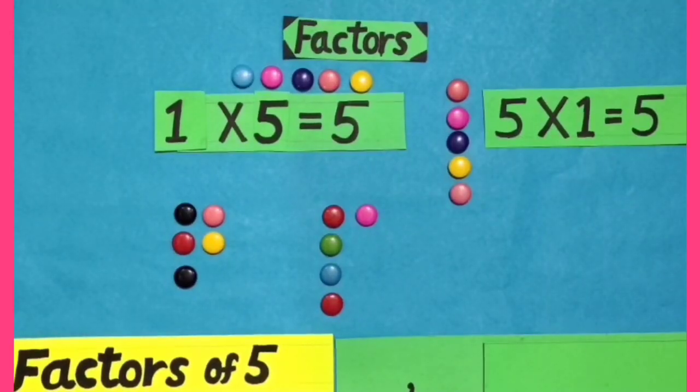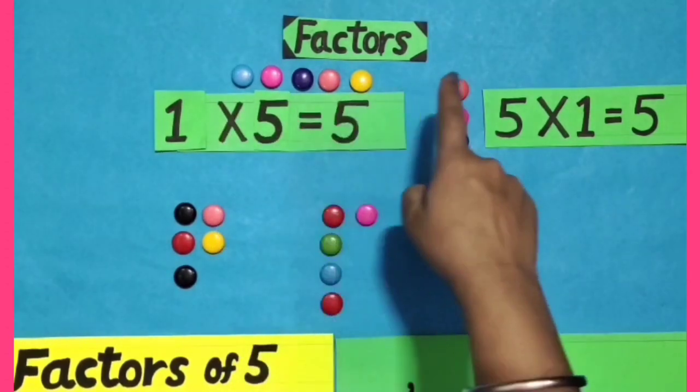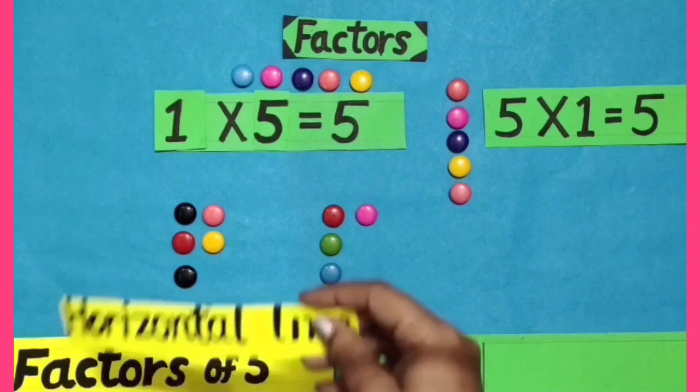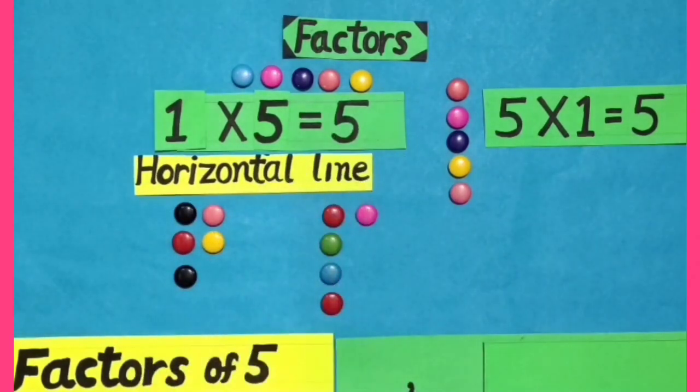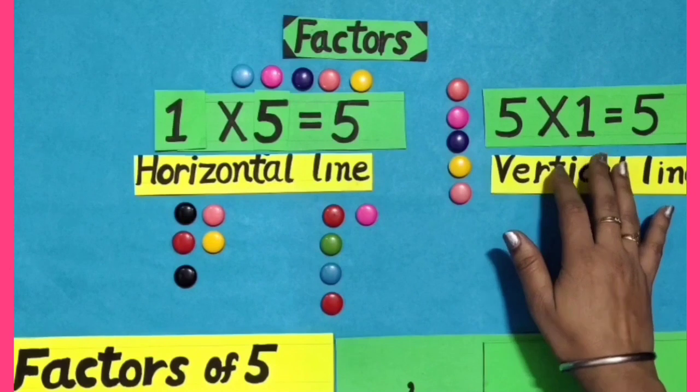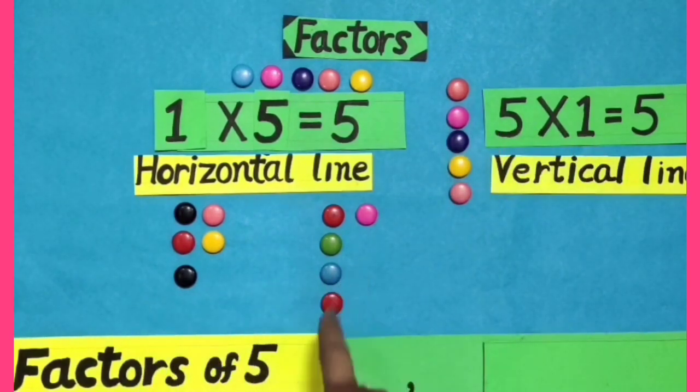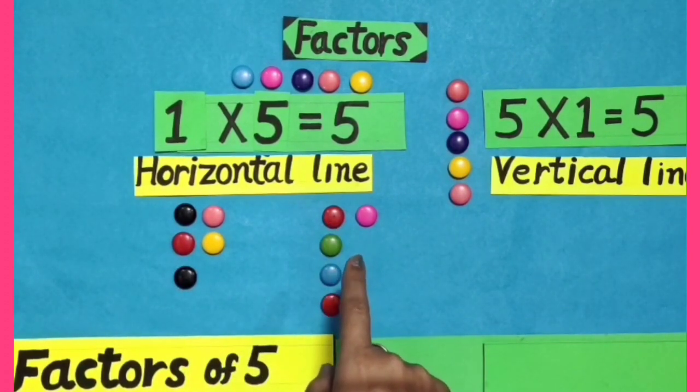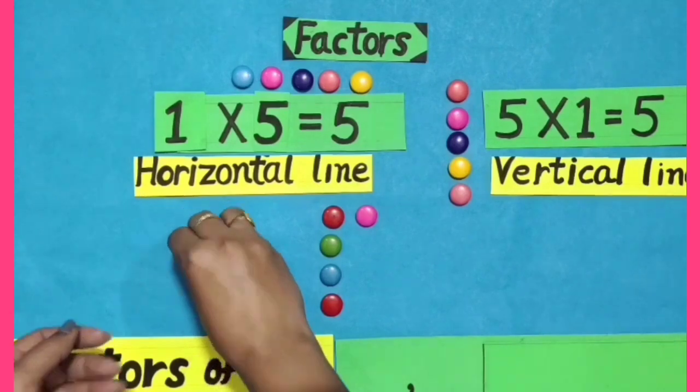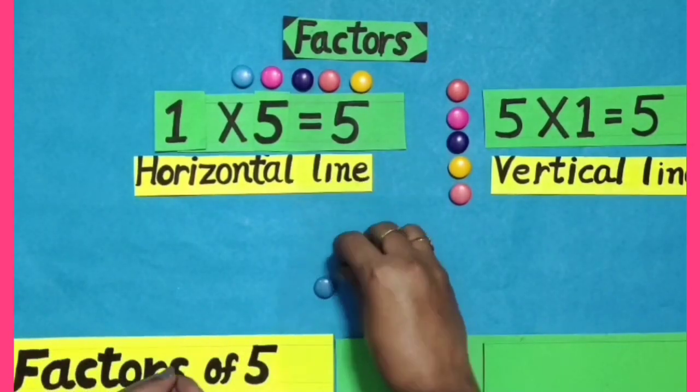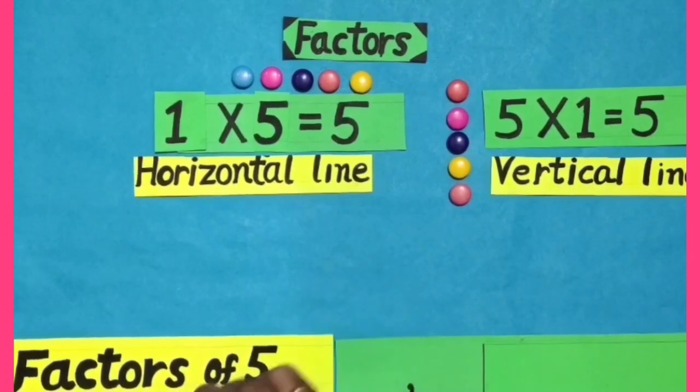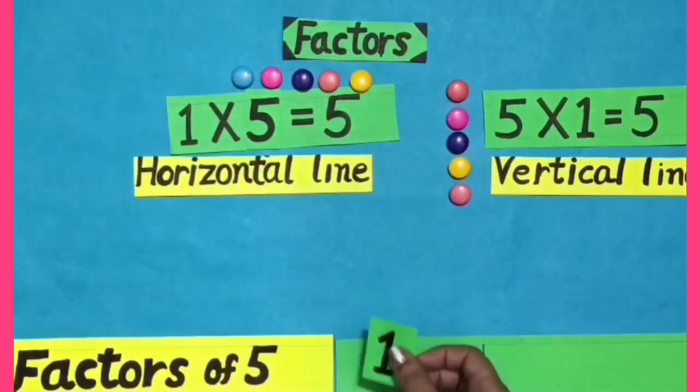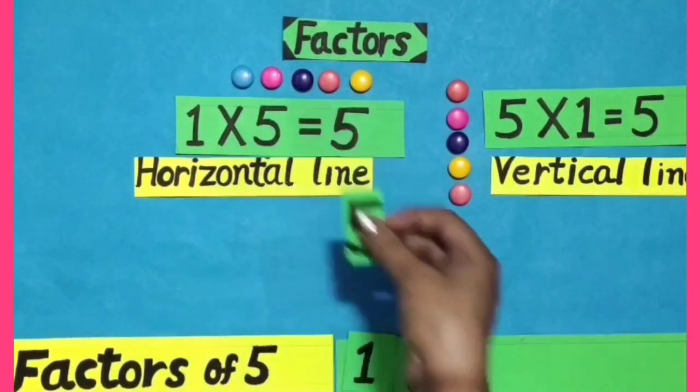We will do factors of 5. I have arranged these 5 buttons in different ways. Here we get a horizontal line. Here we get a vertical line. But in these two figures, neither we get a rectangular shape nor a square shape. So these two figures do not make factors of 5. Therefore, factors of 5 are 1 and 5.